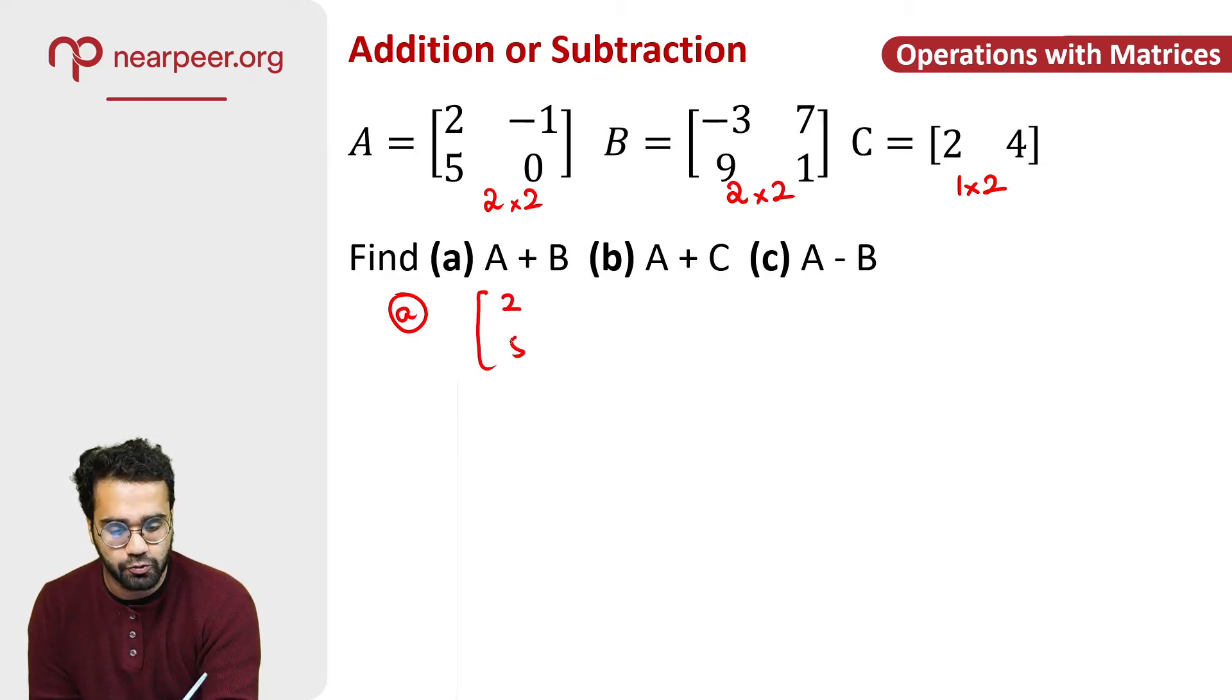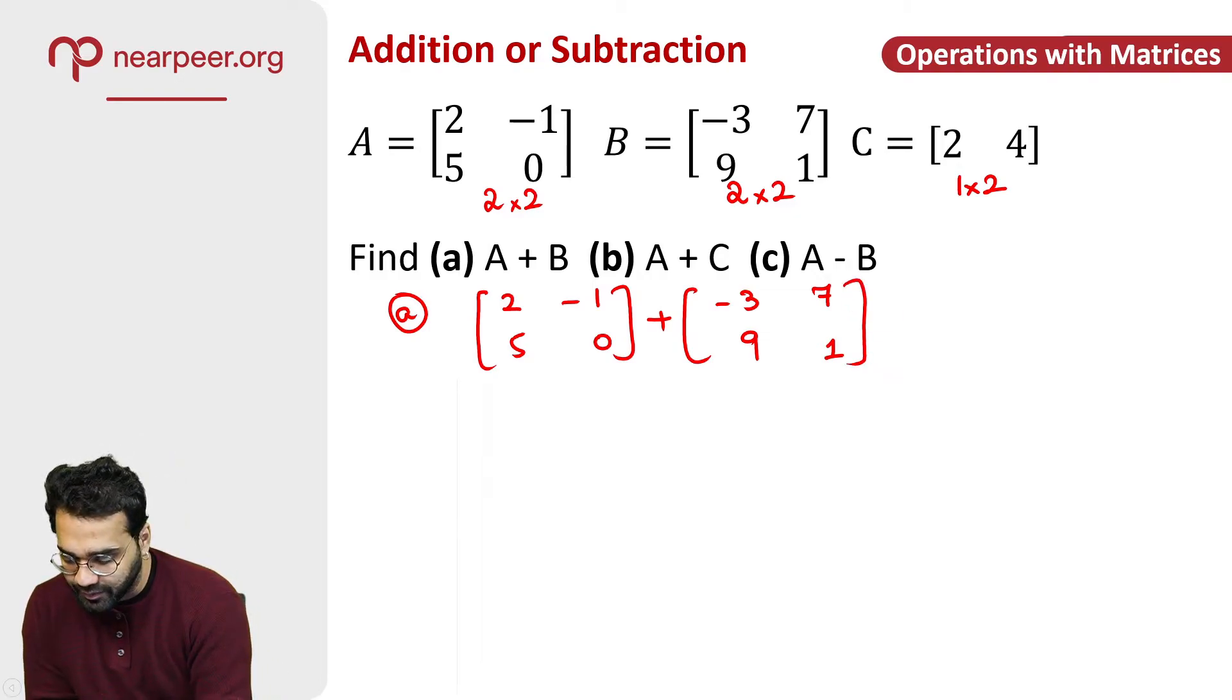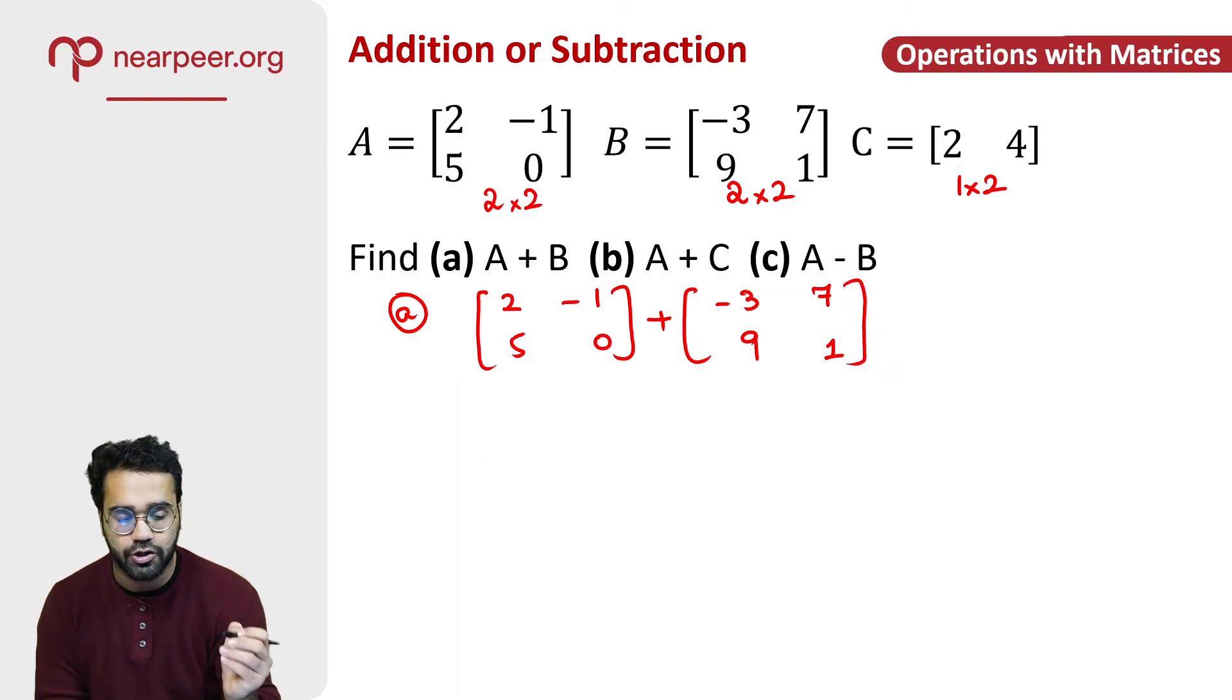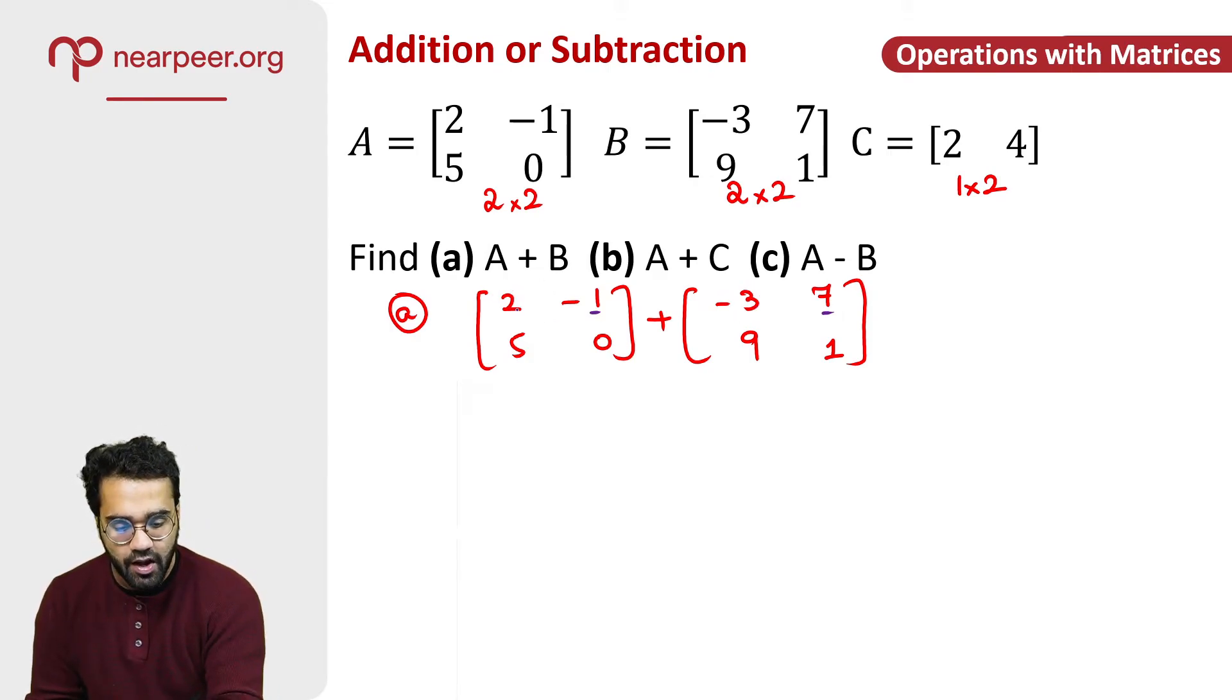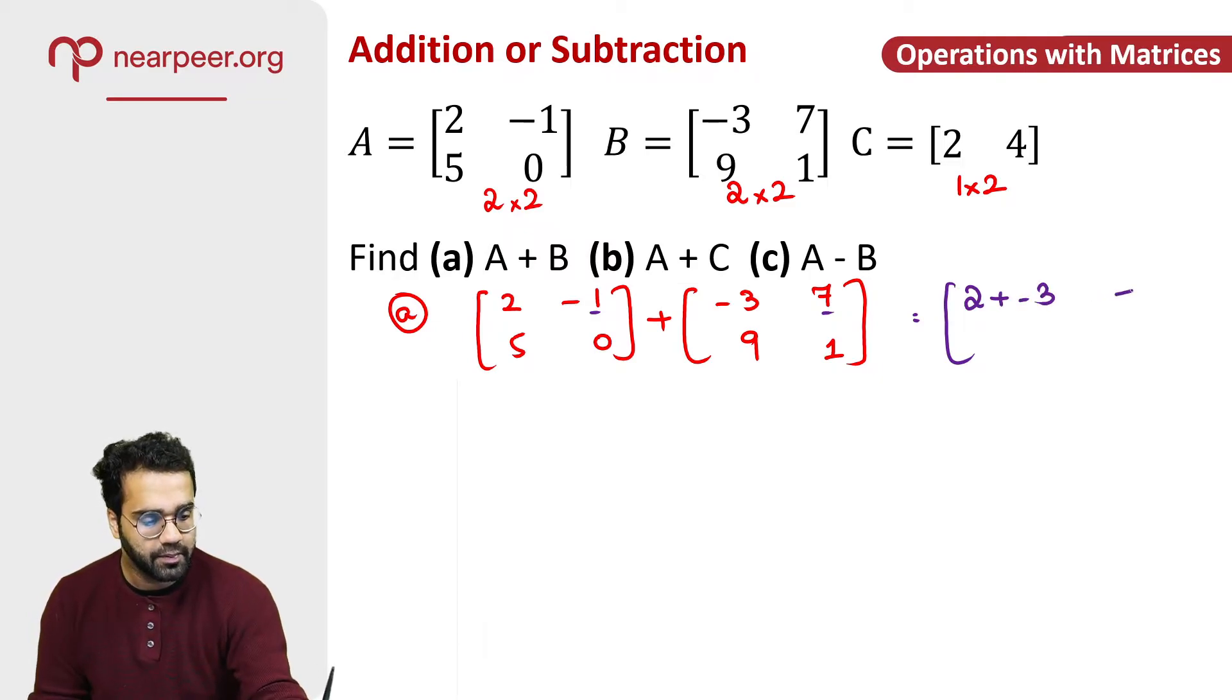So how do I do that? I write matrix A: 2, 5, minus 1, 0. I write all the values plus B which is minus 3, 9, 7 and 1. Now look very carefully how do you add these matrices? You add them by adding the corresponding term. The first term here adds to the first term here. The next term here adds to the next term here and so on and so forth. So it would simply be 2 plus minus 3, minus 1 plus 7, 5 plus 9, and 0 plus 1 and all of these terms still remain independent of each other.